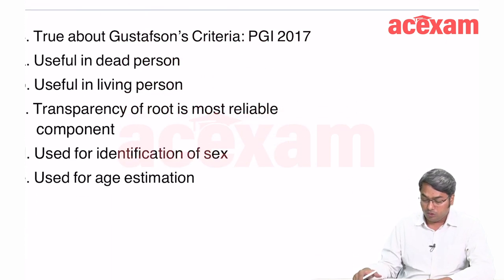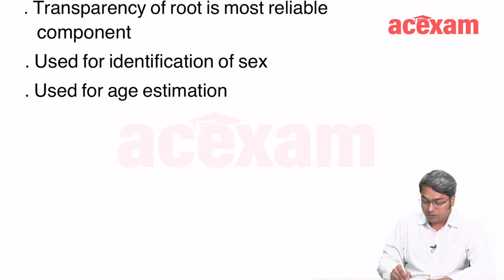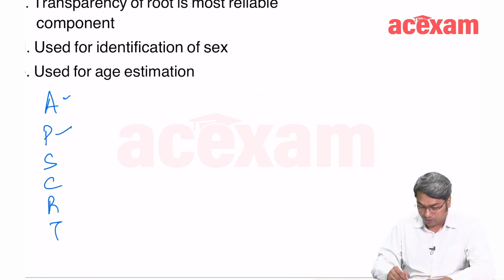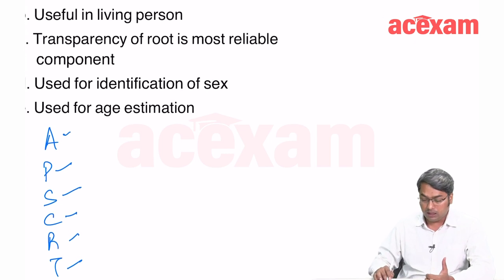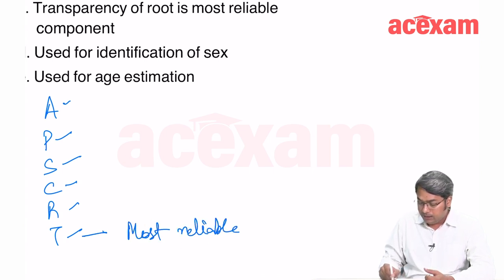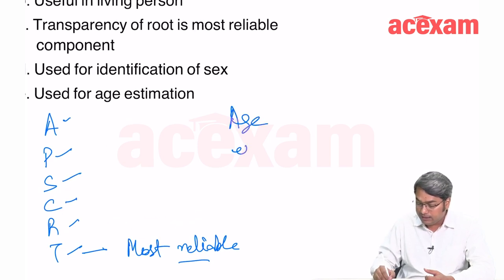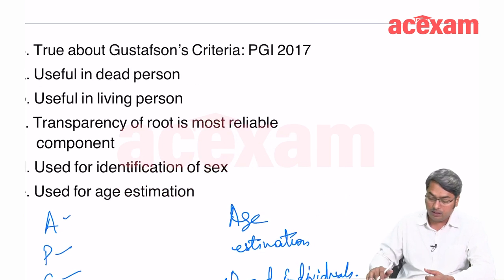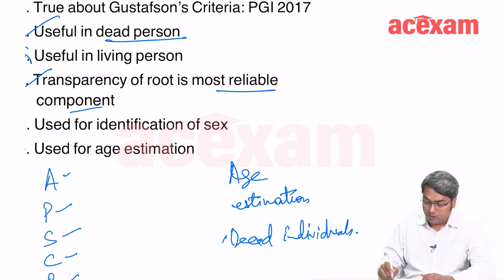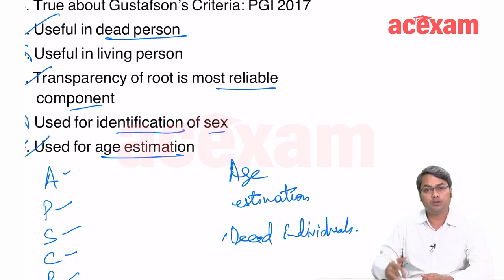Gustafson's criteria has six components remembered by APSCRT: Attrition, Paradontosis, Secondary dentine formation, Cementum apposition, Root resorption, and Transparency of root. The most reliable criterion is transparency of root. It is used for age estimation in dead individuals only — not in living persons. It cannot be used for sex identification. The correct options are: useful in dead persons, transparency is most reliable, and used for age estimation.